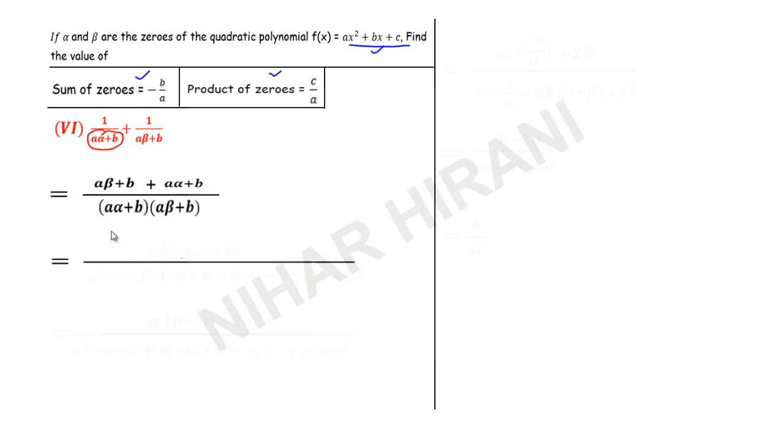Now let us work on numerator first. Here I can say b appears two times, so this is 2b. Now I will simplify this: a beta, a alpha plus 2b.